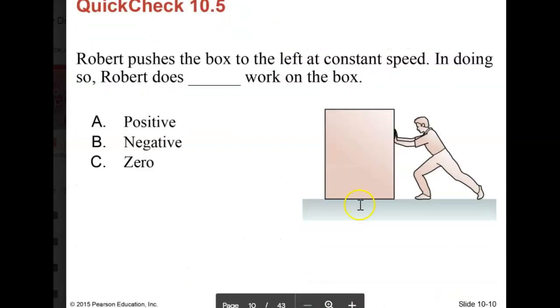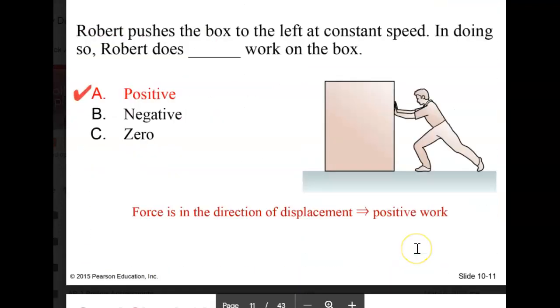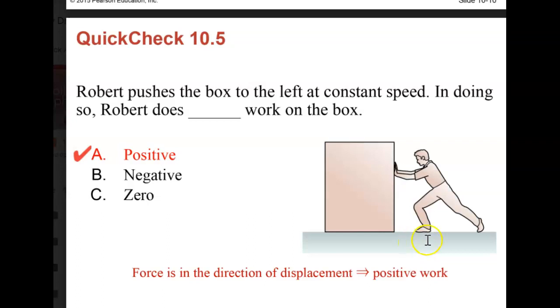Robert pushes the box to the left at constant speed. In doing so, Robert does blank work on the box, positive, negative, zero. Again, how does the force, the direction of the force, compare to the direction of the observed displacement? If you said positive work, you are correct. Robert did positive work because the force is in the same direction as the displacement. The work is considered positive. Very important.